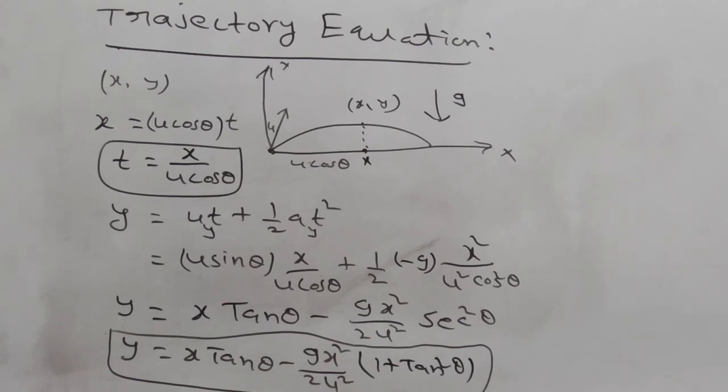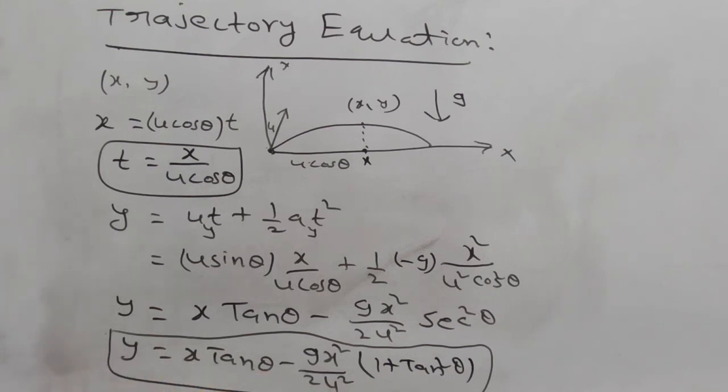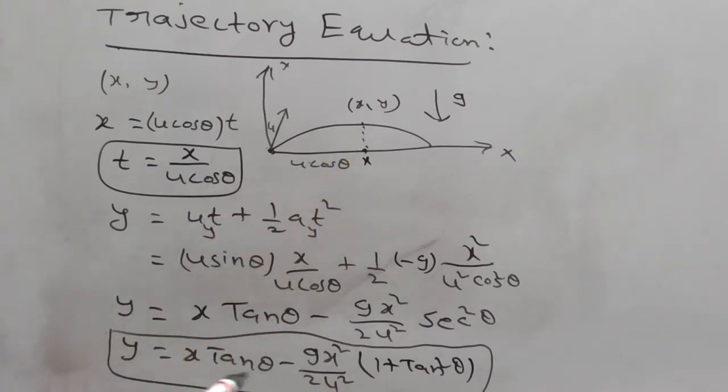So one more observation here. For one value of y, for one value of y you get two values of x. Why? Because if you know y, substitute here, then automatically it is x square, x, constant equation. x square x constant gives a quadratic. For a quadratic equation we get maximum two values. Therefore for one value of y we get two values of x. This is also important point in projectile motion.